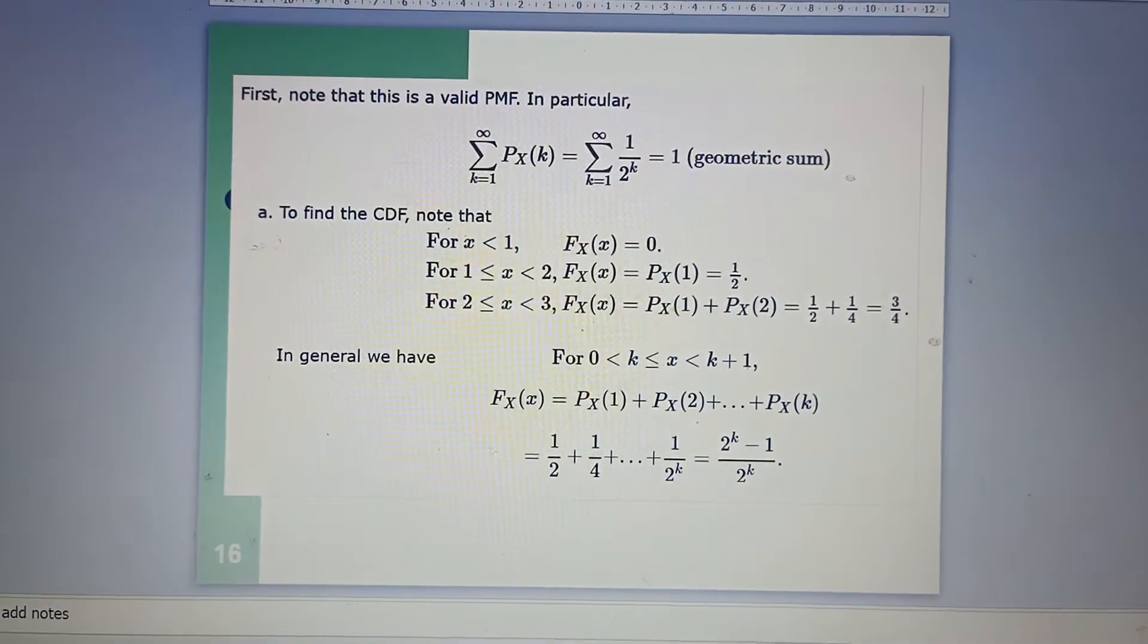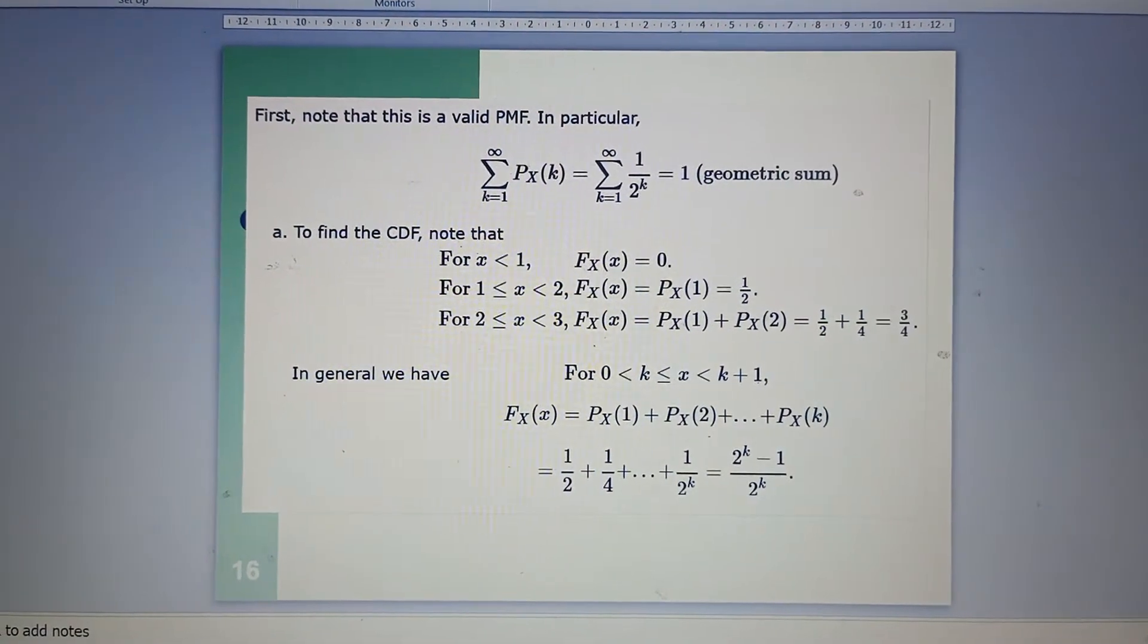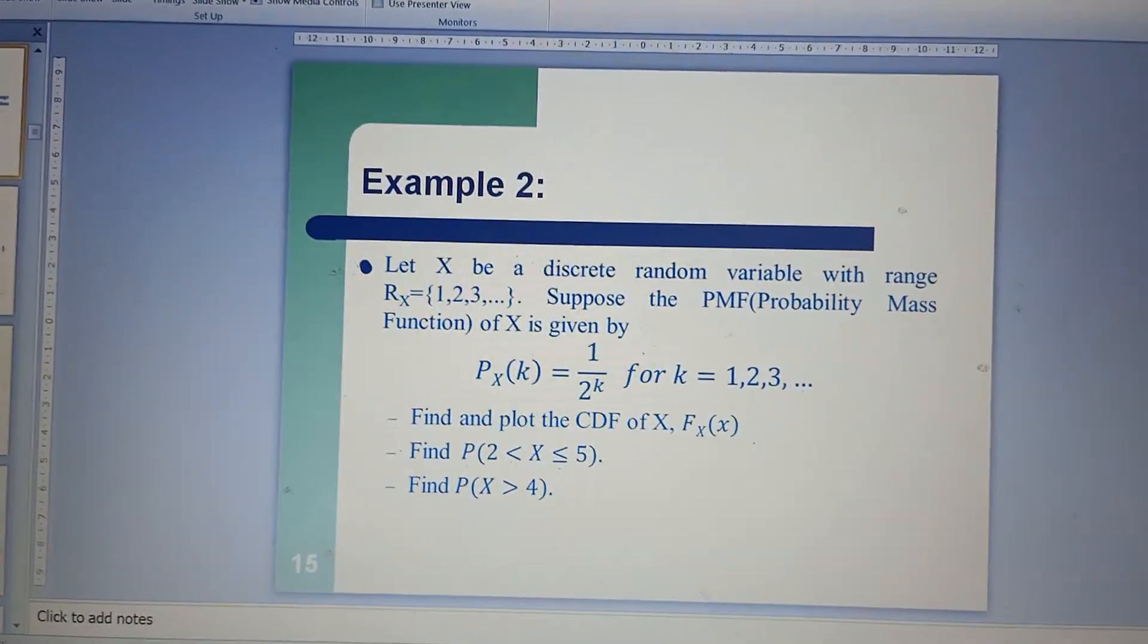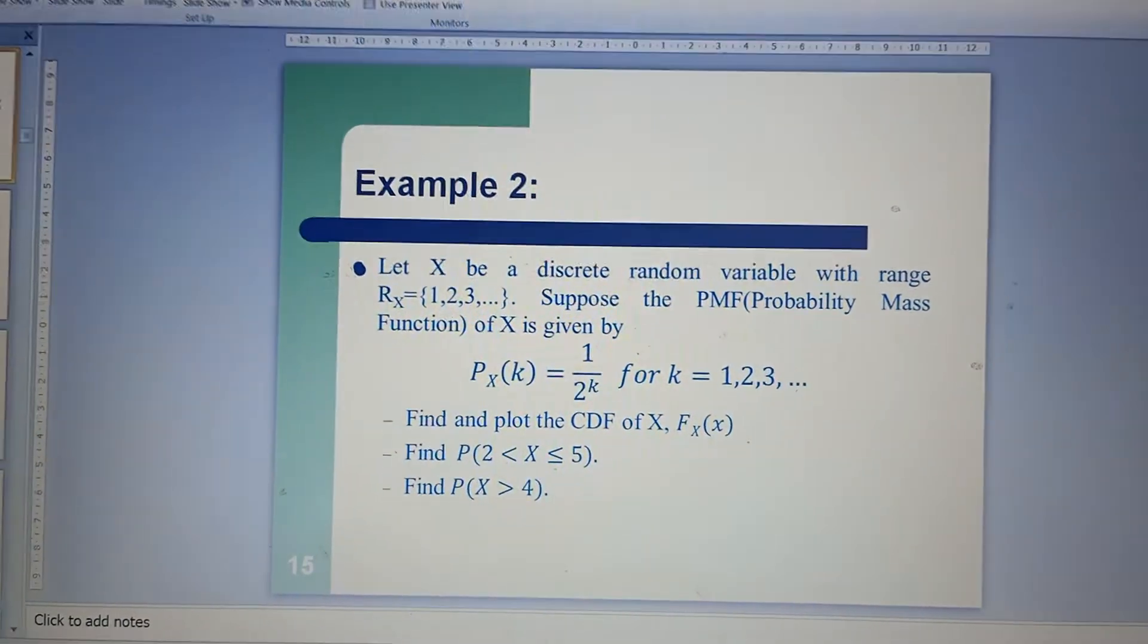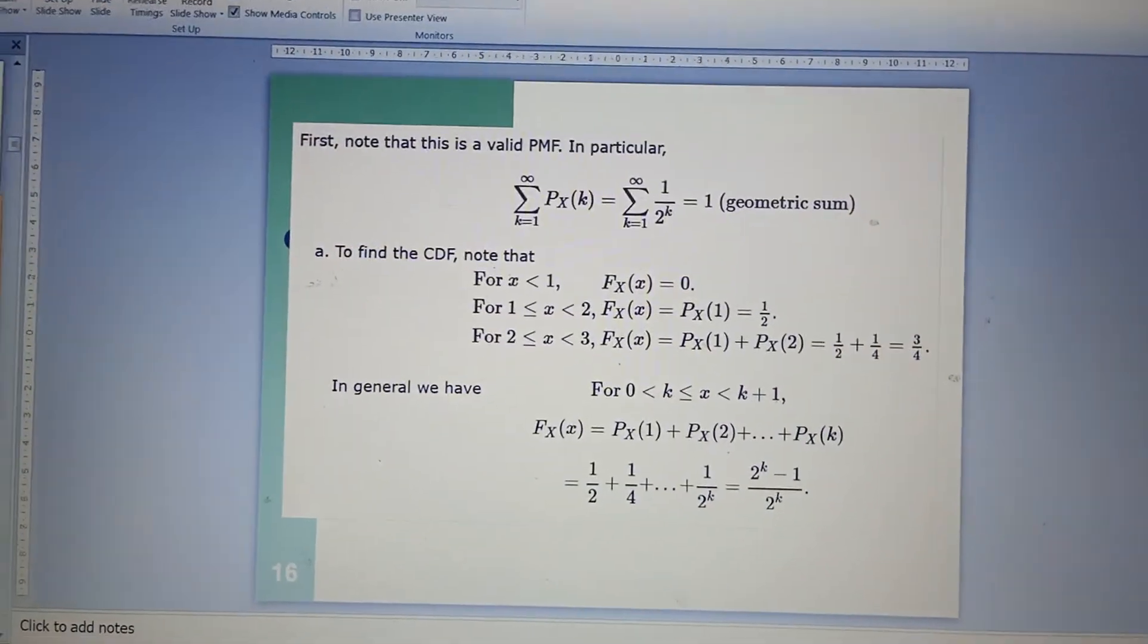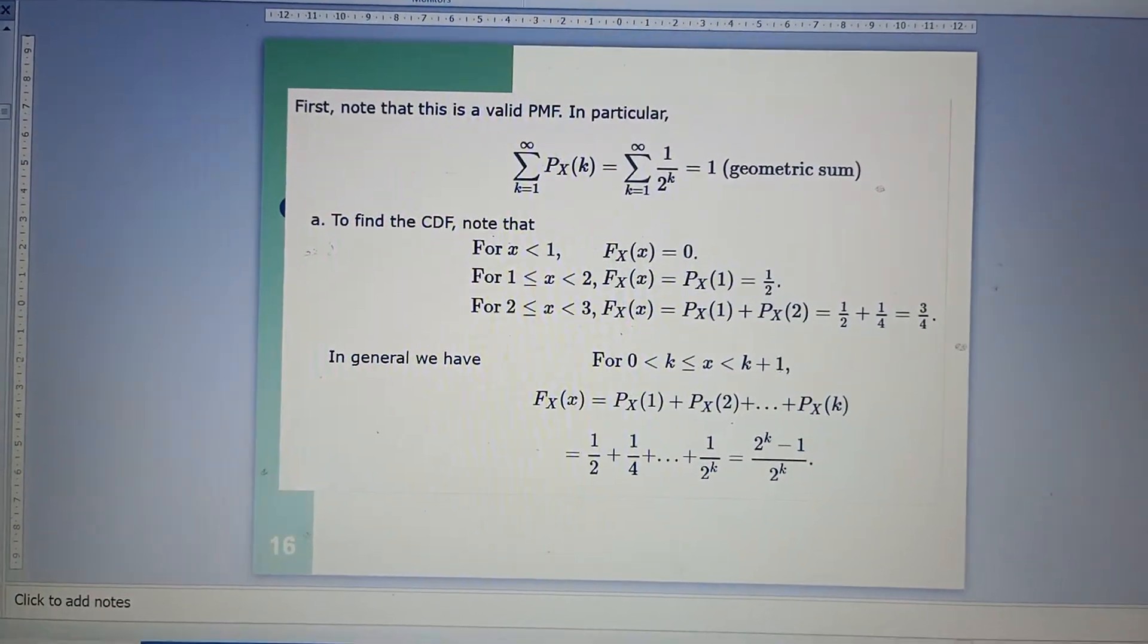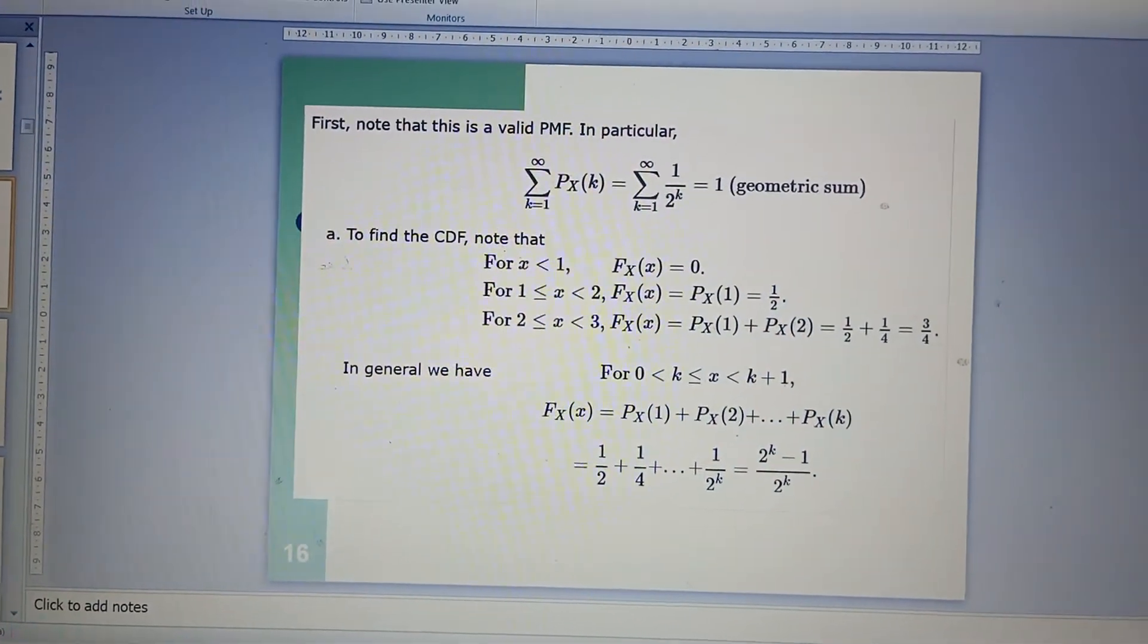Summation of k equals 1 to infinity of P_X(k), where P_X(k) is given in the question as 1 over 2^k. If you see in the question, P_X(k) is 1 over 2^k, right? So summation of k being 1 to infinity of P_X(k) will be 1 to infinity of 1 over 2^k, which should equal 1. I'm telling you again, the summation of all probabilities will be equal to 1 always.